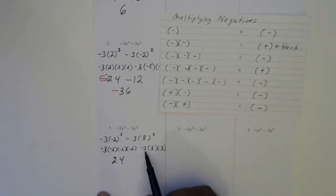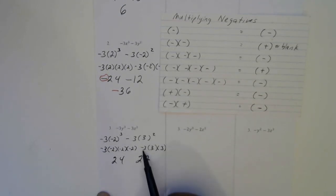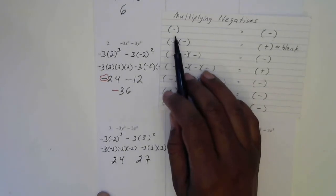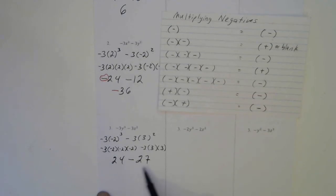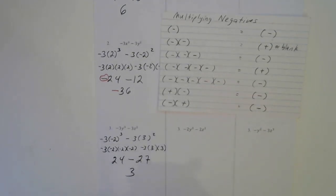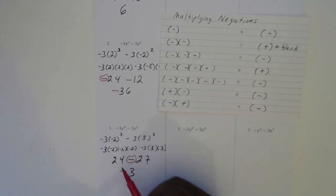Then we have 3 times 3 is 9, and 9 times 3 is 27, so this will be 27. This is multiplying with just one negative — when you multiply with one negative, the final answer is going to be negative, so this is negative 27. These are different signs, so we're going to subtract. 24 from 27 leaves us 3. And the bigger sign always wins — 27 is bigger, so the negative is going to win, so this will be a negative 3.